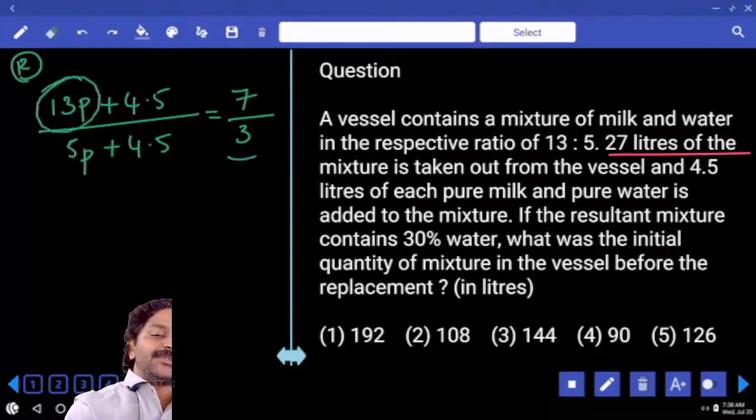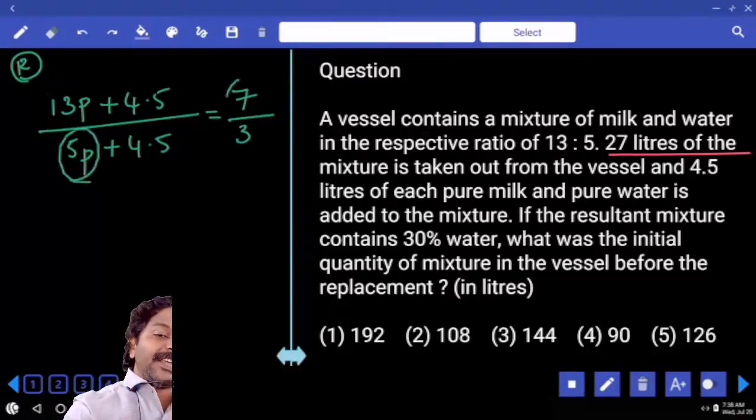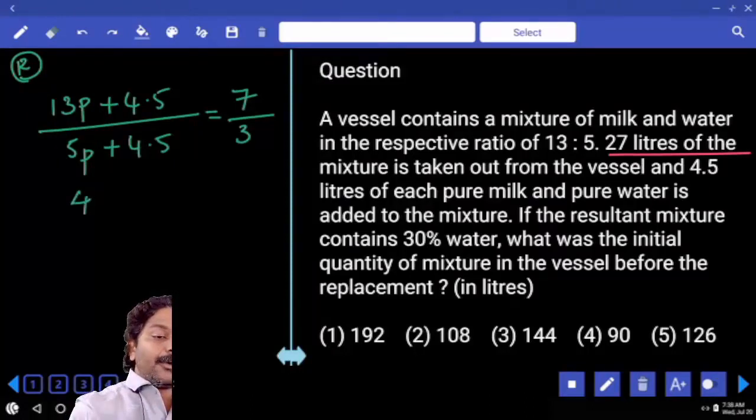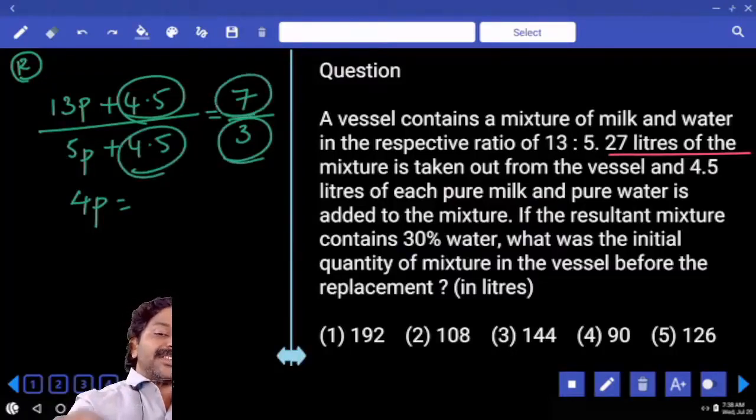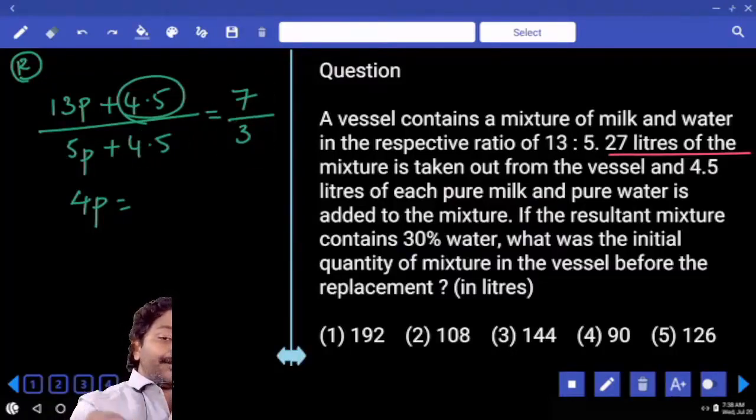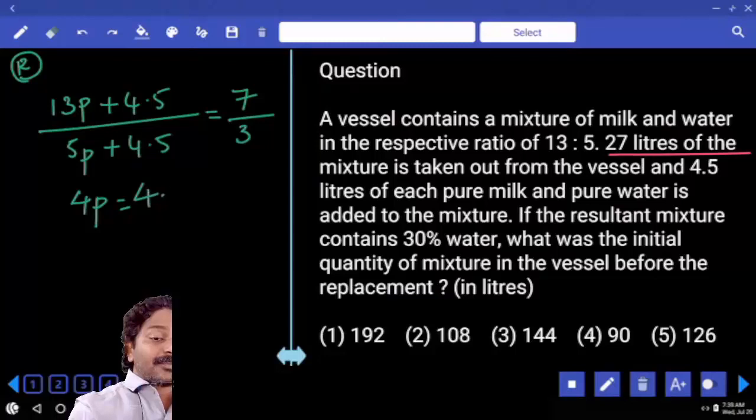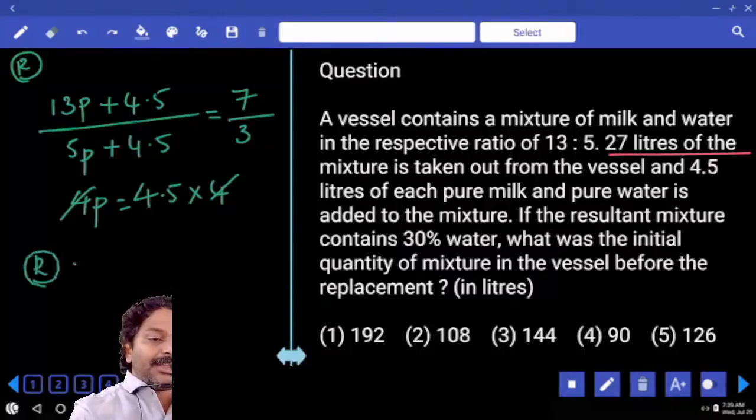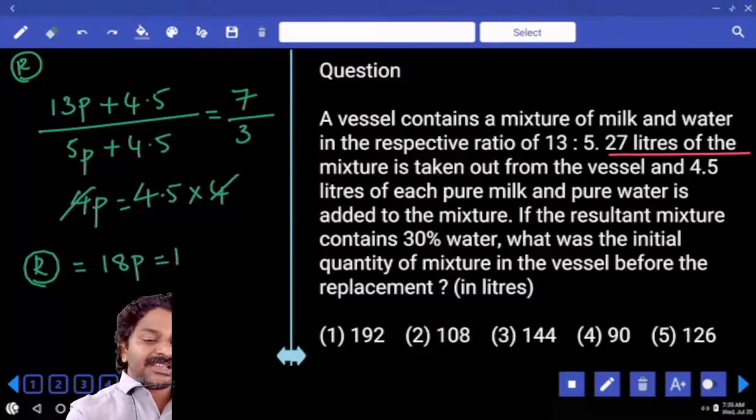13 times 3, 5 times 7. Difference 4 parts is equal to 4.5 times 3, 4.5 times 7. Difference is 4.5 times 4 only. From this 1 part is equal to 4.5.